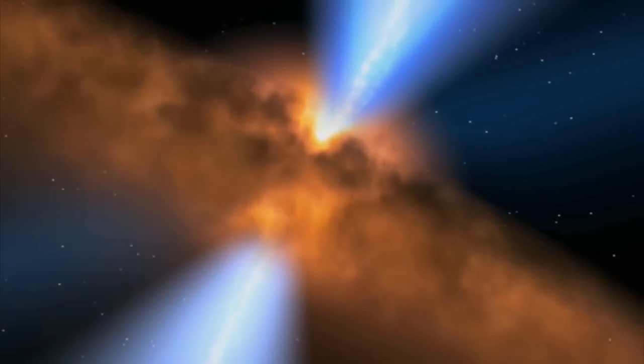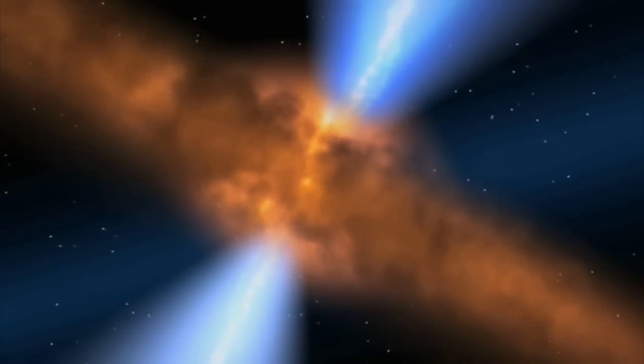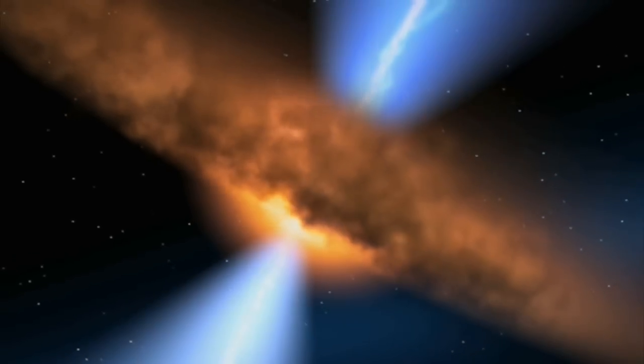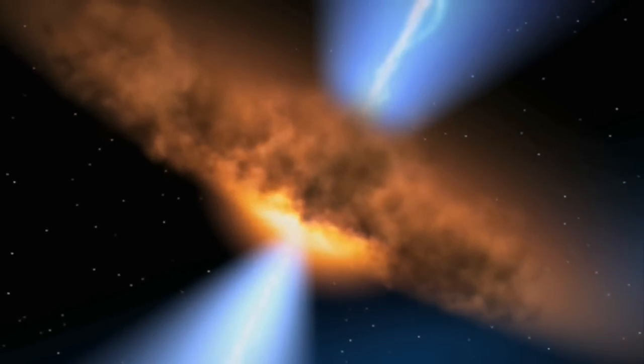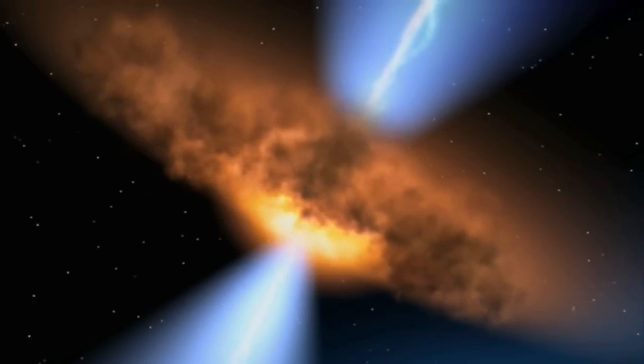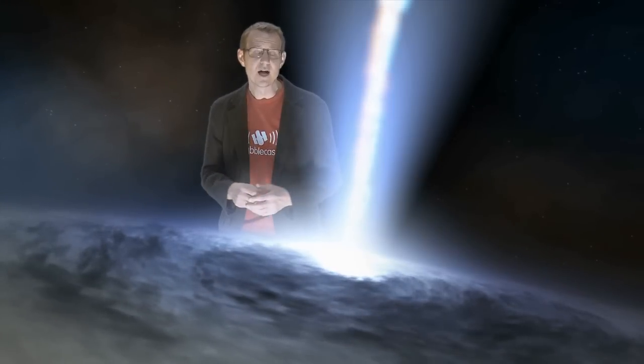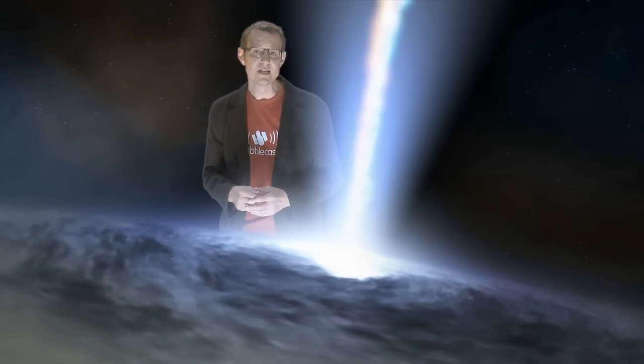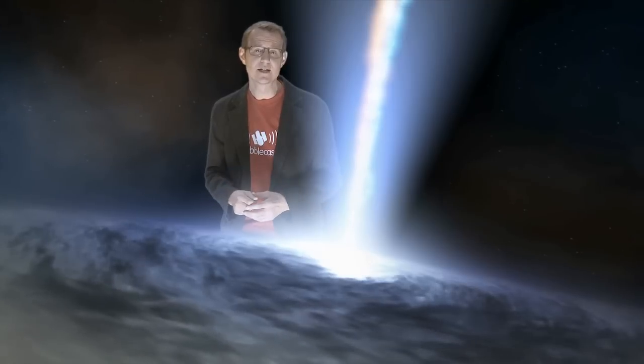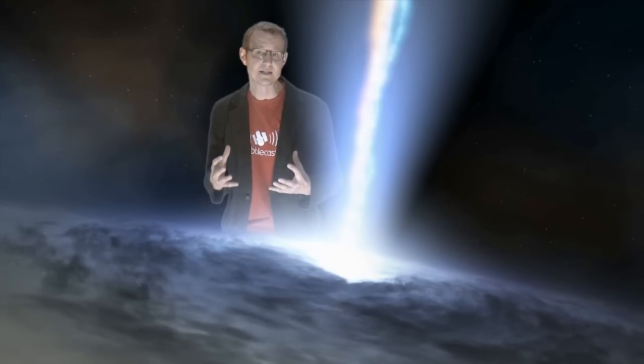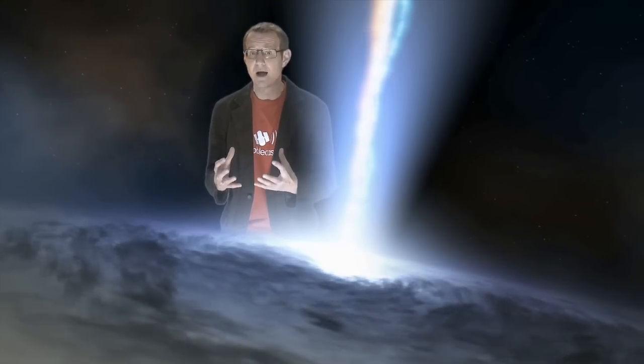The thing is, a quasar can get so greedy that its radiation is powerful enough to actually blow away all the gas and the dust that is feeding it. And so it seems that there's a natural upper limit to the rate at which a black hole can grow. Now this implies that one wouldn't expect to see any really big and really powerful quasars in the very early universe because there simply wouldn't have been enough time to build up the supermassive black hole that is needed to power a quasar.